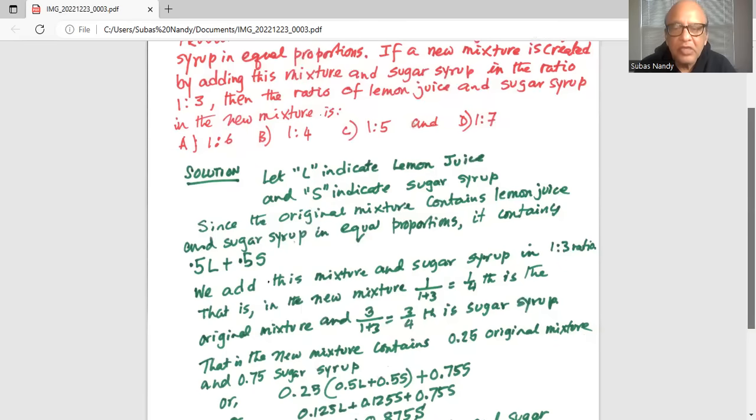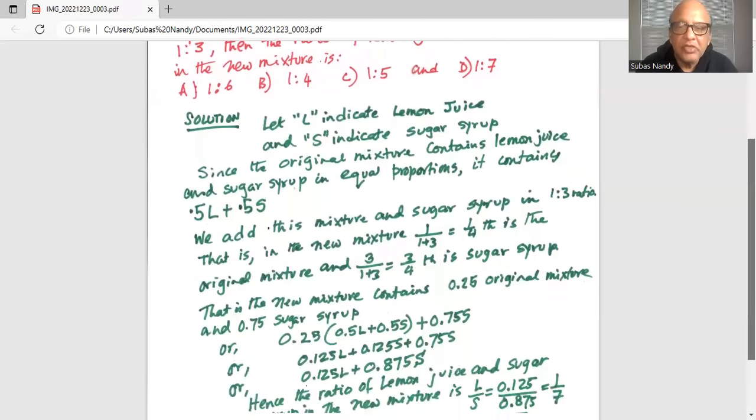We add this mixture and sugar syrup in 1 is to 3 ratio. That is, in the new mixture, 1 divided by 1 plus 3 is equal to 1/4 is the original mixture, and 3 divided by 1 plus 3 or 3/4 is sugar syrup.